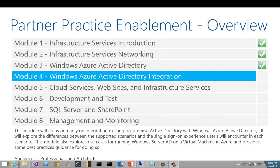Welcome to Module 4 of the Partner Practice Enablement Bootcamp for Windows Azure. In this module, we will look at Windows Active Directory and Windows Azure integration. This module will focus primarily on integrating existing on-premise Active Directory with Windows Azure Active Directory. We'll also explore the differences between the supported scenarios and the single sign-on experience that users will encounter in each scenario. We will also look at use cases for running Windows Server Active Directory on a virtual machine in Windows Azure and provide some best practices for this scenario.